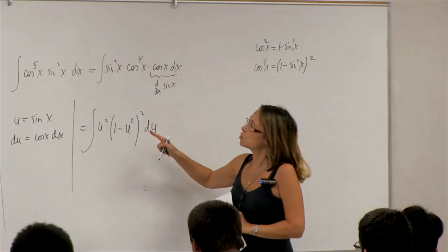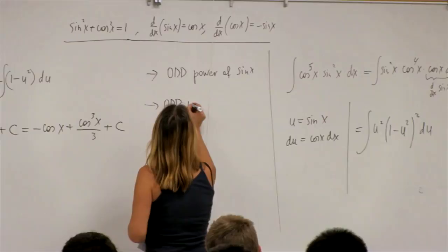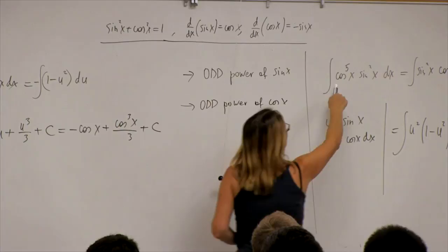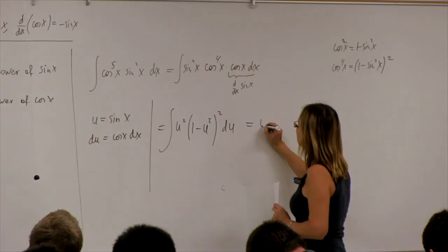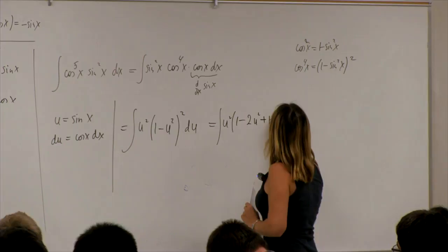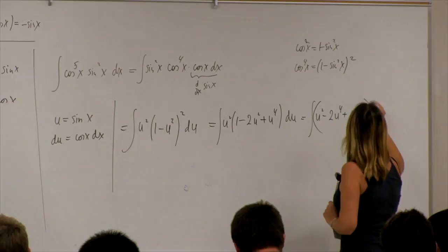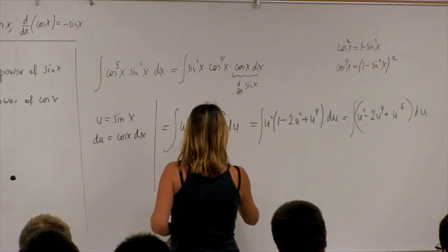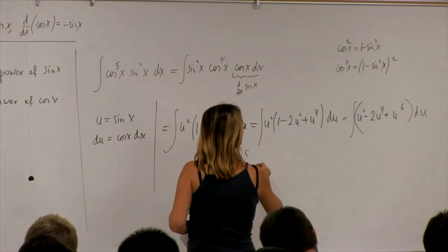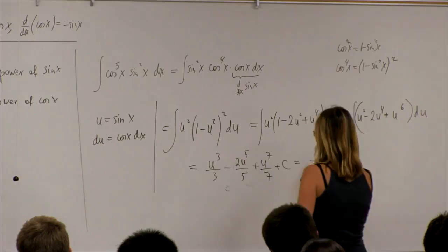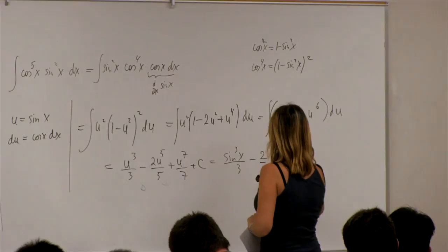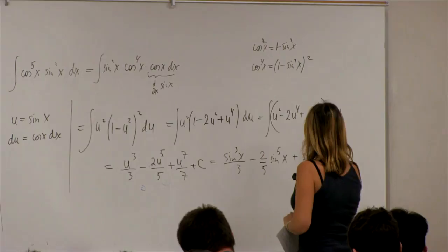It was good that this power was fourth, because I was able to use the identity and simply square it to get cosine in terms of sine, in terms of u. So here I had an odd power of cosine, and I used it. Let me finish so you have the complete picture: we have u squared and we expand the squares. The rest is quite standard, and we rewrite back in terms of sine. This is the answer.